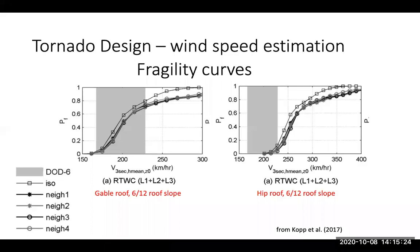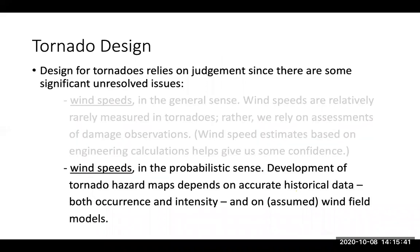I think as wind engineers, one of the areas where we've been lacking compared to other hazards like earthquake engineering is that we don't have fragility curves for all of these structures. As we get more and more of those done, that will help us with damage assessments and getting wind speeds from damage observations in tornadoes.